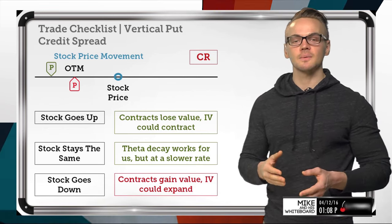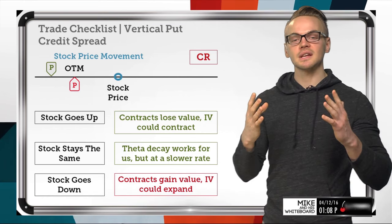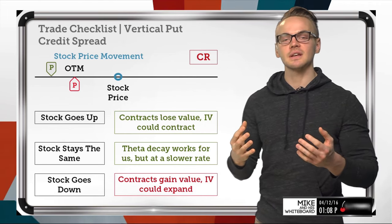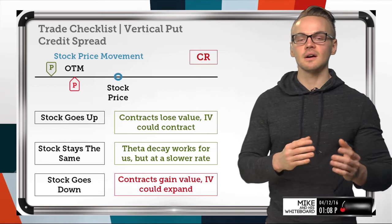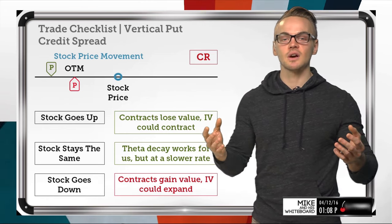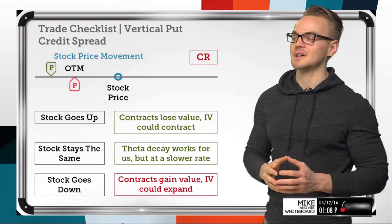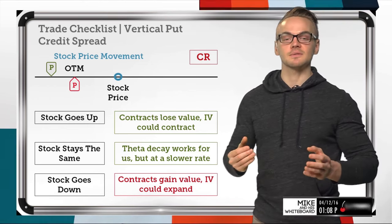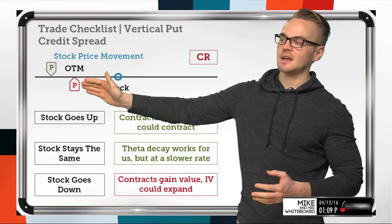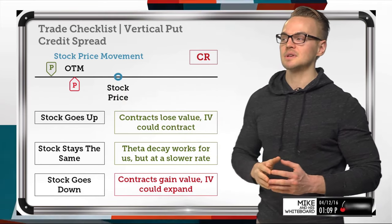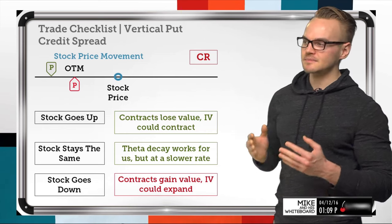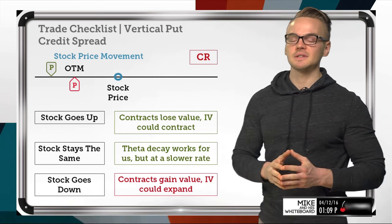We know the relationship between implied volatility and option pricing — higher IV increases option prices because it reflects where the underlying is implied to go over a certain period of time. Because we have both a short and a long option in this spread, the IV factor doesn't affect us as much as it would with just the naked option, since the long option partially offsets IV expansion risk.